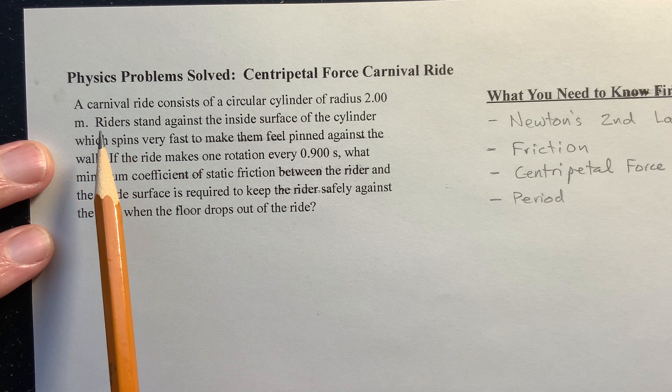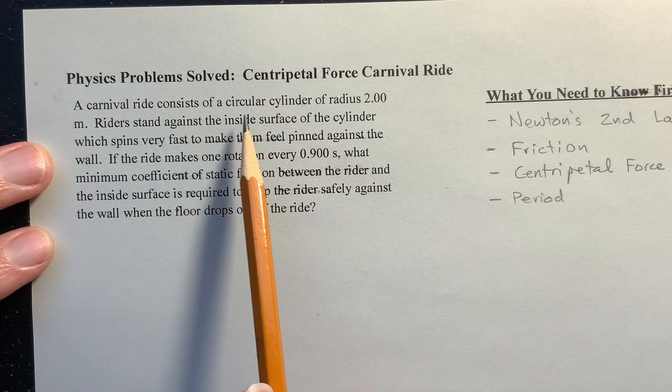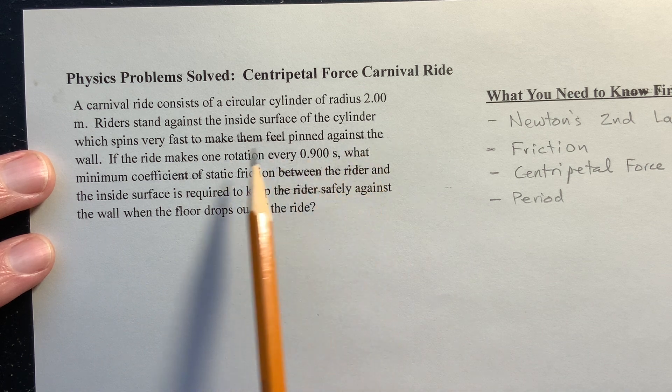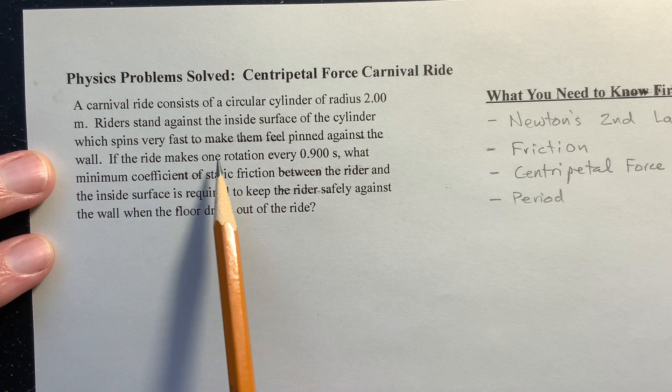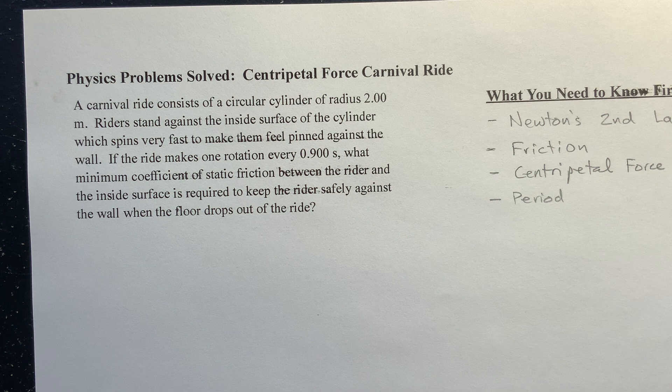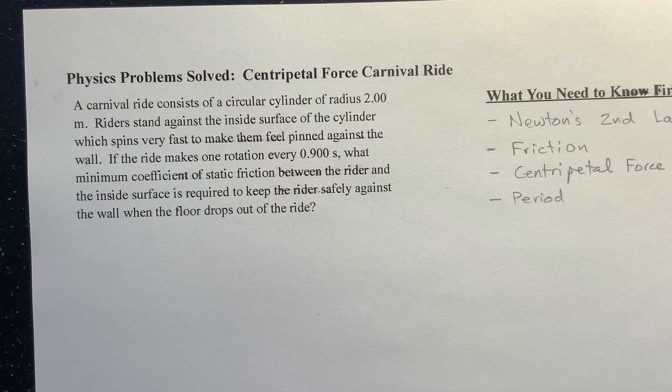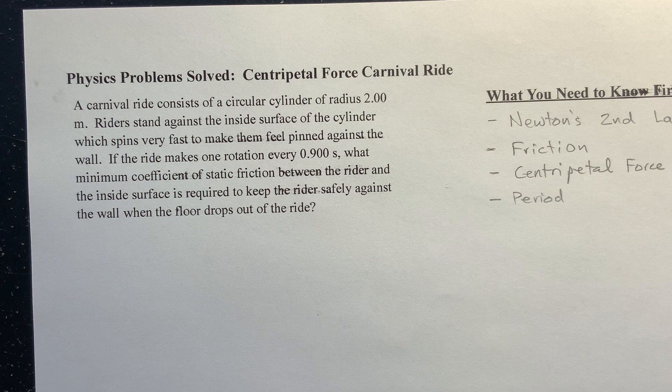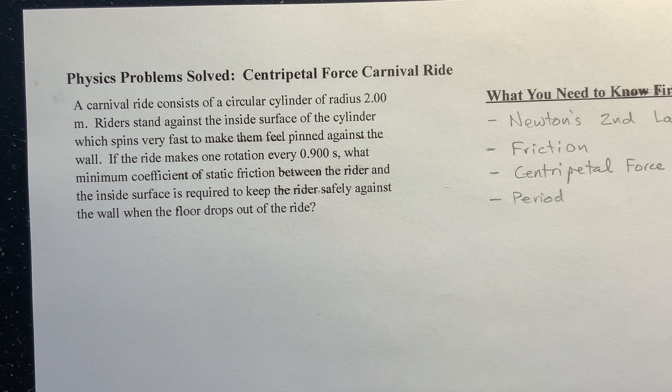We have a carnival ride which consists of a circular cylinder of radius 2 meters. Riders stand inside the inside surface of the cylinder, which spins very fast to make them feel pinned against the wall. If the ride makes one rotation every 0.900 seconds, what minimum coefficient of static friction between the rider and the inside surface is required to keep the rider safely against the wall when the floor drops out of the ride.